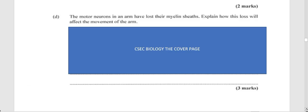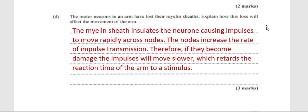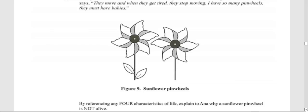The motor neuron in an arm has lost its myelin sheath — explain how this affects movement of the arm. The myelin sheath insulates the neuron, causing impulses to move rapidly across nodes, which increases the rate of impulse transmission. If the myelin sheath is damaged, impulses will move slower, retarding the reaction time of the arm to a stimulus and slowing down arm movement.